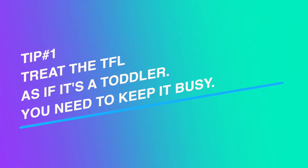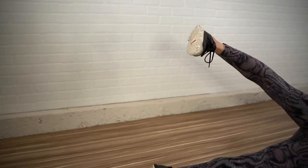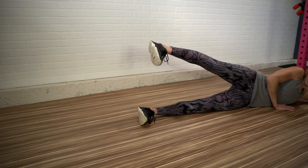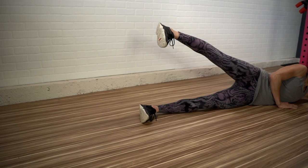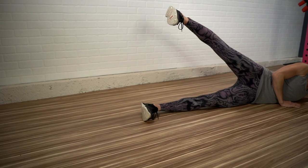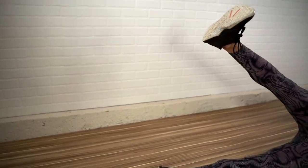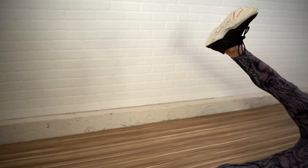Tip number one: treat the TFL like a toddler — you need to keep it distracted. You're trying to keep the TFL engaged in something else, like internal rotation, as you do the lateral raise, so you can focus on the glute medius. Because the TFL creates external rotation at the tibia, by internally rotating it you're actually shutting it off. You're also internally rotating your hip, which keeps the TFL busy. So if you struggle with lateral raises and you notice you're constantly turning your toe open toward the ceiling, try this internal rotation — it can really help you activate your glute medius better.